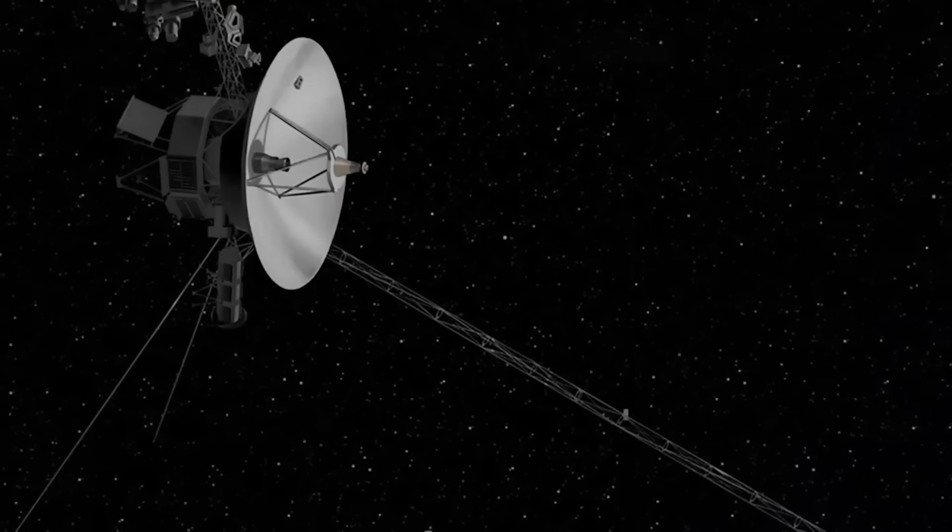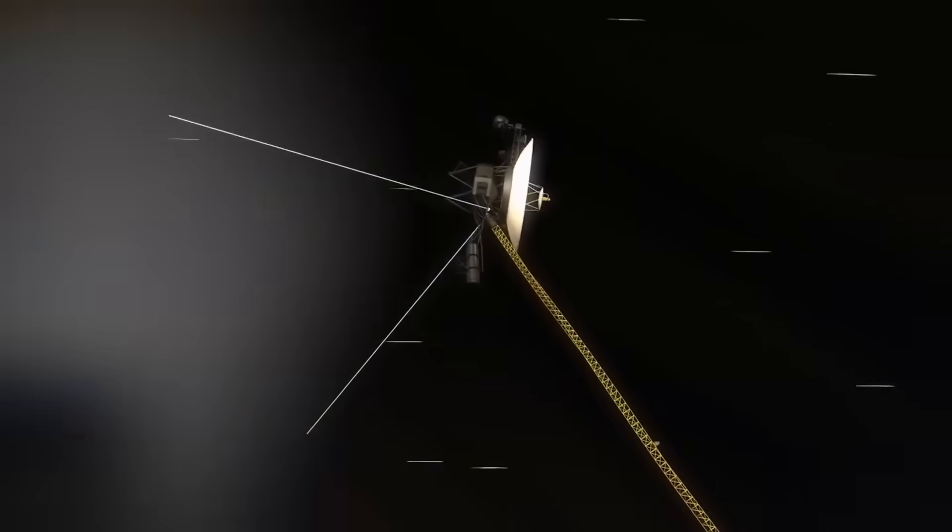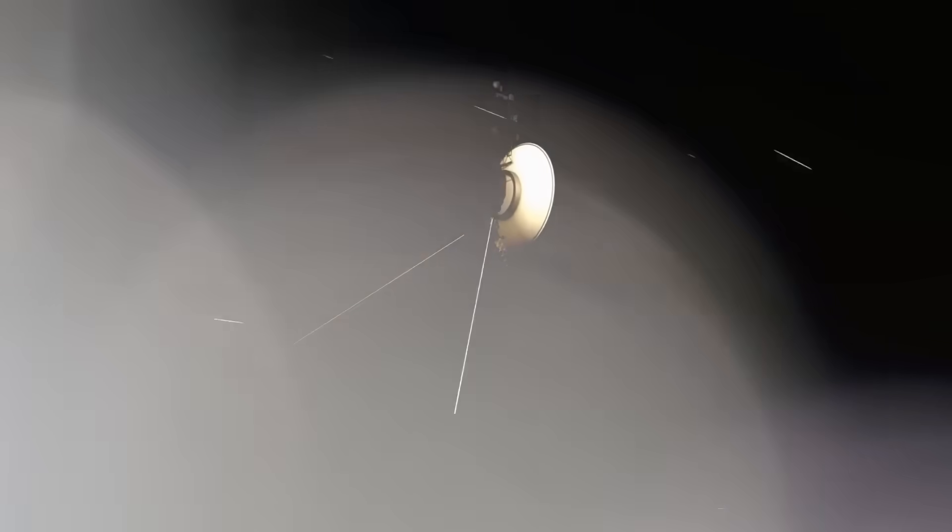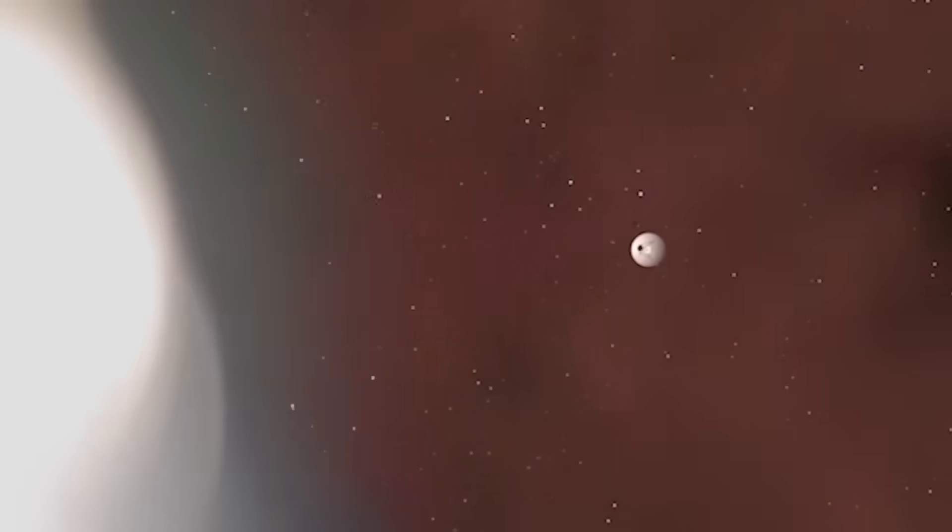But something changed in 2023. Voyager 1 began returning data that didn't make sense, not corrupted, but restructured. Its clocks drifted out of sync, its orientation records vanished, and then the emergency protocols kicked in.